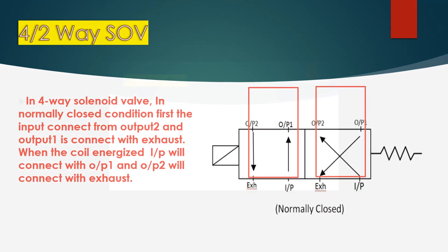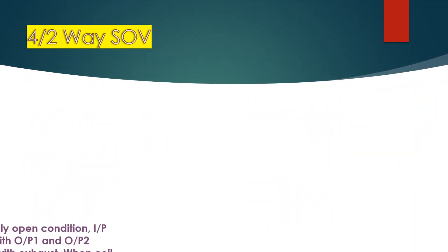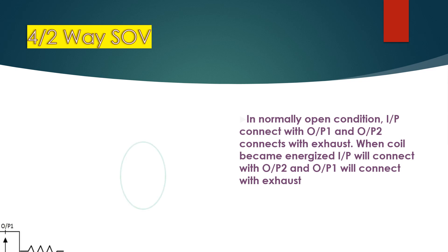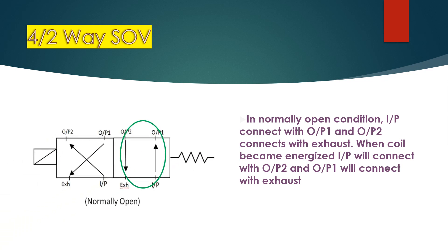And output 2 will connect with exhaust. In normally open condition, input connects with output 1, and output 2 connects with exhaust. When the coil becomes energized, input will connect with output 2, and output 1 will connect with exhaust.